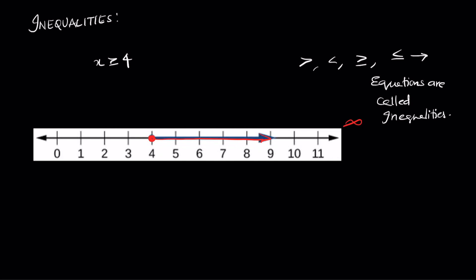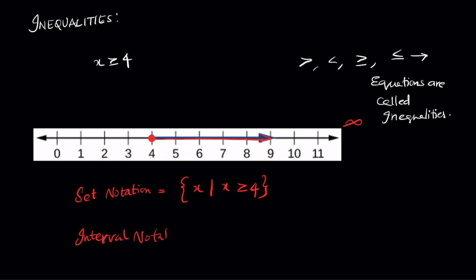There are two other ways to represent inequalities. One is set notation, where we say the value is x such that x is greater than or equal to 4. The other way is to represent by interval notation, which can be written as closed interval 4 comma infinity.